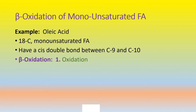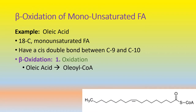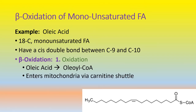When beta oxidation starts, oleic acid is converted into oleoyl-CoA — this is the activation step, occurring in the cytosol. From there, it enters the mitochondria via the translocase protein and attachment with carnitine to form acyl-carnitine. Within the mitochondria, it is released as oleoyl-CoA for beta oxidation.